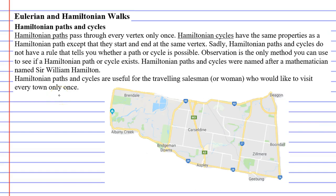In this video we're going to look at Hamiltonian paths and cycles, named after the mathematician Sir William Hamilton. A Hamiltonian path will pass through every vertex only once. In the previous video we were talking about passing over every edge only once; this time we're talking about passing over every vertex only once.